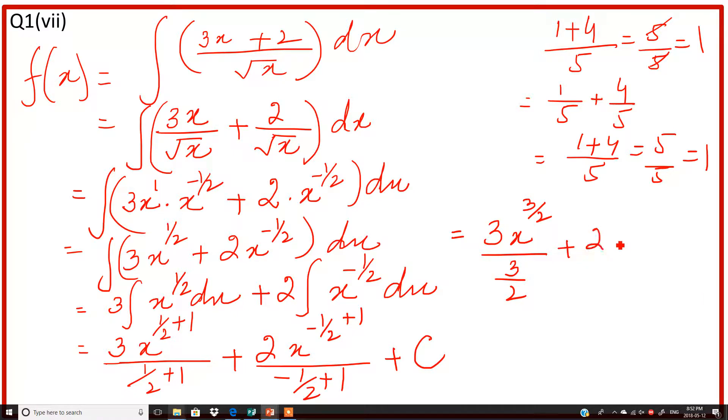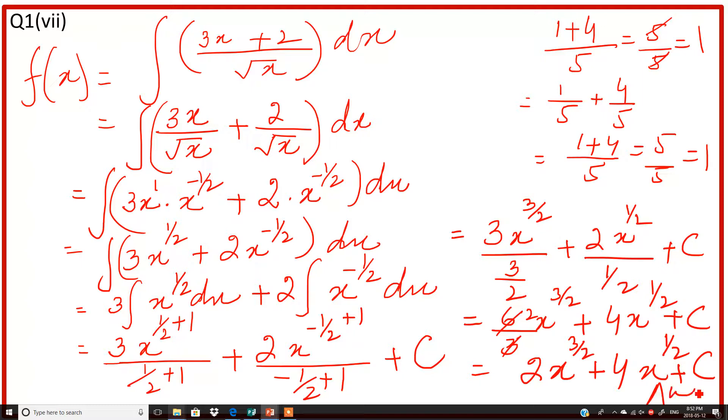This 2 will multiply with 3, it will be 6 over 3, which simplifies to 2x raised to power 3 over 2 plus 4x raised to power 1 over 2 plus c. This is our answer.